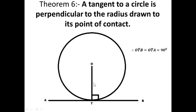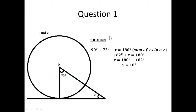Now looking at the slide on screen, you can see a circle with a line touching it — that line is a tangent. A radius is drawn from the center perpendicular to the tangent, so that angle is 90 degrees. Given that the other angle in the triangle is 72 degrees, we need to find angle x. Using the sum of angles in a triangle: 72 + 90 + x = 180, so 162 + x = 180, giving x = 18 degrees.